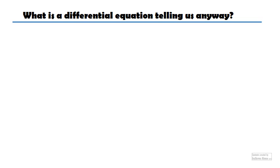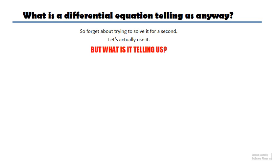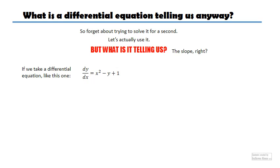So what is a differential equation telling us anyway? Don't try to solve it, just think about it. If you have a differential on one side of the equation then it's telling you the slope. You put a value of x and a value of y and you're going to get the gradient or the slope. For example, if I substitute a value of x and y I can get different values of slopes and I can build a table with this.